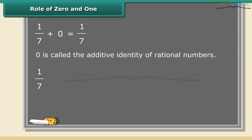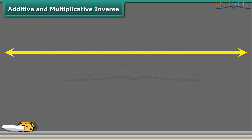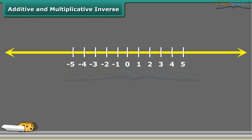Now check out the multiplication of a rational number with 1. What did you observe? When we multiply a rational number with 1, the product is always again that rational number. For this reason, 1 is called the multiplicative identity of rational numbers.